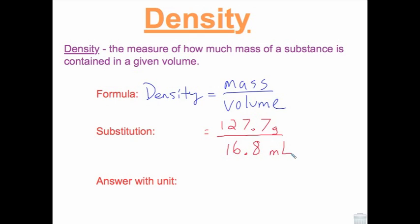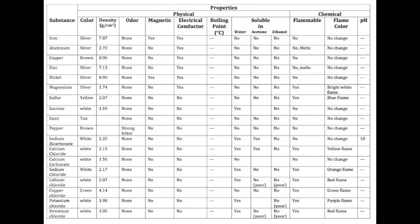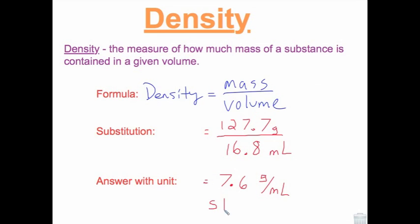After dividing, we find the density to be 7.6 grams per milliliters. We can compare our density to a known chart and determine that the unknown substance is made of steel.